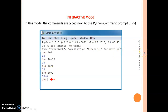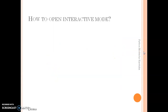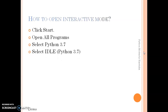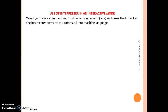To open interactive mode, click Start, open All Programs, select Python 3.7, then select IDLE Python 3.7. That is how you open Python interactive mode.